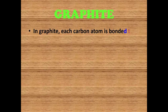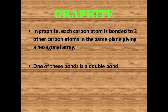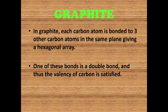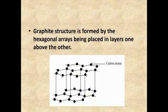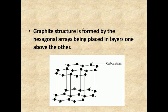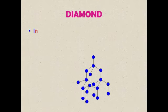In graphite, each carbon atom is bonded to three other carbon atoms in the same plane, giving a hexagonal array. One of these bonds is a double bond, and thus the valence of carbon is satisfied. Graphite structure is formed by the hexagonal arrays being placed in layers one above the other.